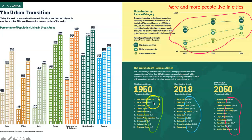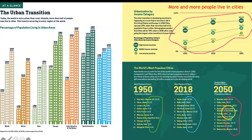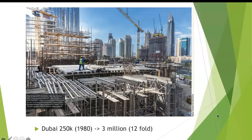If we take a look at the numbers here from 1950 to 2050 — this is a projected population — we can see there's a rapid growth of populations in cities. We're talking about several millions to over 20 and 30 millions. That's a lot of people.